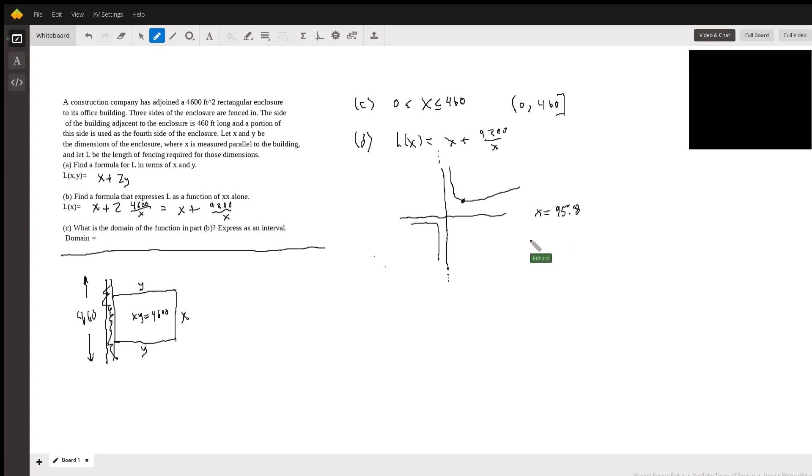If we wanted to check this, we would just find y now. Y we know is equal to 4600 over x. So let's do that: 4600 divided by 95.8.